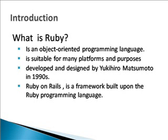Ruby supports multiple programming paradigms including functional, object-oriented, imperative, and reflective. It also has a dynamic type system and automatic memory management. Ruby on Rails is a framework built upon the Ruby programming language. Rails is a framework that makes developing web applications in Ruby take less time, once you get past its learning curve.